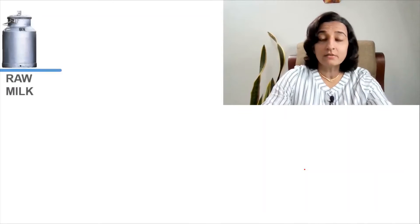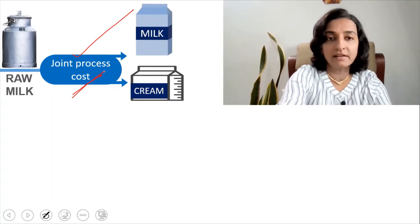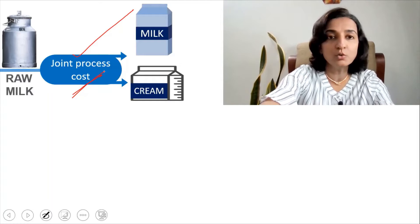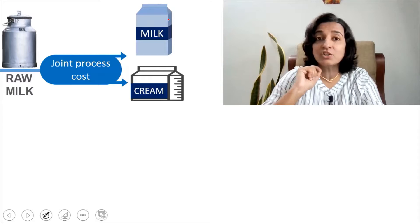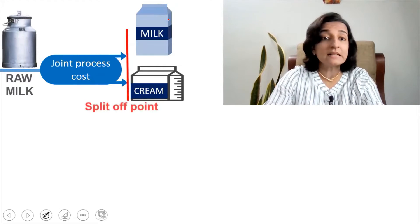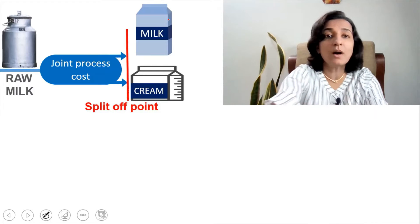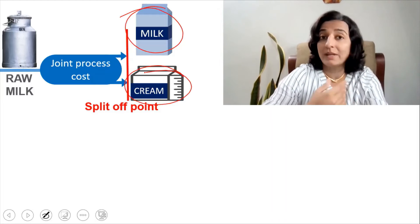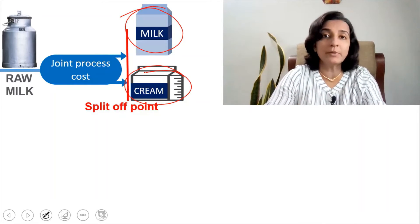Let's see a picture to understand this better. First, raw milk is obtained in the factory. Then there is a joint process for which costs are incurred, and then you get the two joint products — milk and cream. The point at which the joint products are separated is known as the split-off point. The company can either sell the milk and cream as such or further process them into a different product.